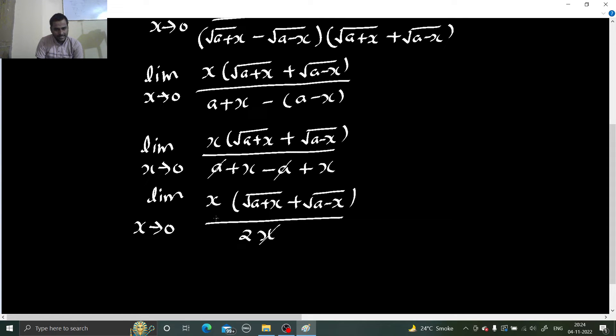Now this x can be cancelled and as you can see this x was creating a 0 by 0 form which is no more present. Now if I try to put 0 in this step then it will be under root a plus under root a which is no more a problem. So under root a plus under root a is no more a problem for us. So why not put that.